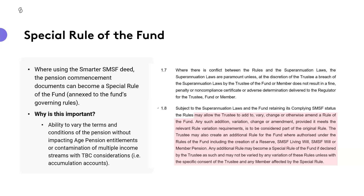If you've ever had a client that's lost their Commonwealth Senior Health Card, you know it's not a pleasant experience. So making sure you understand what type of document is required, and whether the way pension documents are constructed would allow for alterations midstream. The NTLG — the former National Tax Liaison Group Superannuation Committee — said it depends. The ability to make changes midstream ultimately comes back to the governing rules of the fund, our trust deed, and the rules of the income stream.